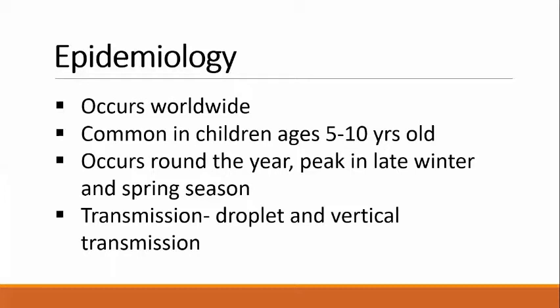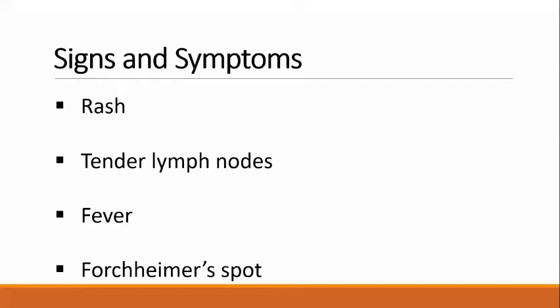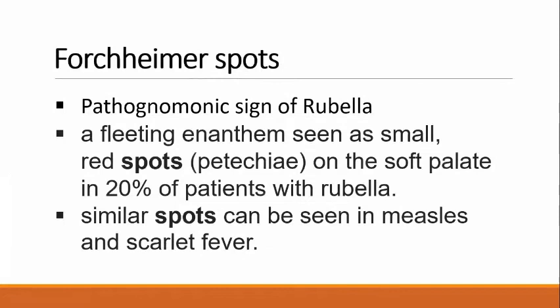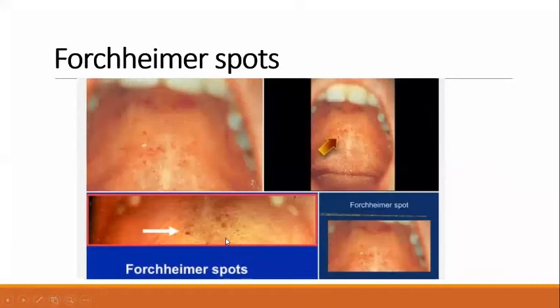Signs and symptoms — Rash: After an incubation period of 14 to 21 days, the primary symptom of rubella virus infection is the appearance of a rash on the face, which spreads to the trunk and limbs and usually fades after 2 days with no staining or peeling of the skin. Tender lymphadenopathy persists up to 1 week. Fever and Forchheimer spots are also present. Forchheimer spots are the pathognomonic sign — small red spots on the soft palate seen in 20% of patients with rubella, similar to spots seen in measles and scarlet fever.